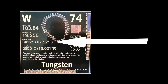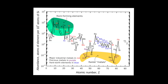Tungsten has the highest melting point of any of the metals. This graph shows the relative abundance of the periodic table elements within the Earth's crust. Tungsten is a rare industrial metal — more rare than many of the rare Earth elements, and even more rare than uranium.